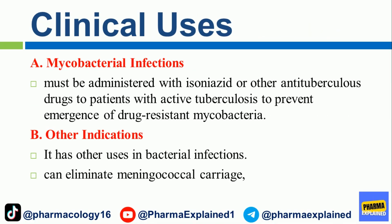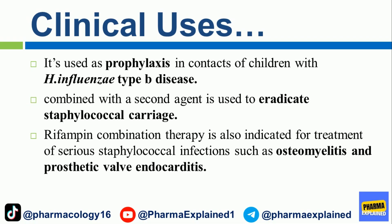Clinical uses: For mycobacterial infections, rifampin must be administered with isoniazid or other antituberculous drugs to patients with active tuberculosis to prevent emergence of drug-resistant mycobacteria. Other indications include eliminating meningococcal carriage, prophylaxis in contacts of children with H. influenzae type B disease, and combined with a second agent to eradicate staphylococcal carriage. Rifampin combination therapy is also indicated for serious staphylococcal infections such as osteomyelitis and prosthetic valve endocarditis.